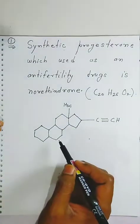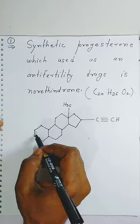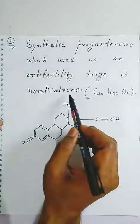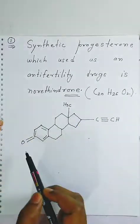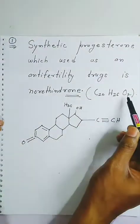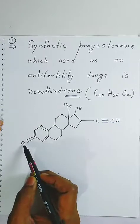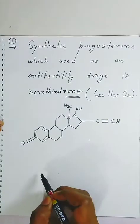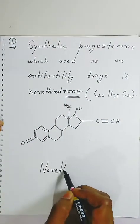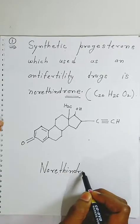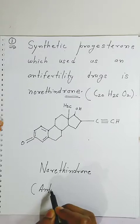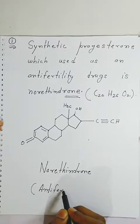We will draw the total number of double bonds — there are 4 double bonds, including 1 double bond with oxygen, which is why it is called a ketone. There is also 1 hydroxyl group, since there are 2 oxygens: 1 from the hydroxyl and 1 from the carbonyl. This is the structure of Norethindrone, and it acts as an anti-fertility drug.